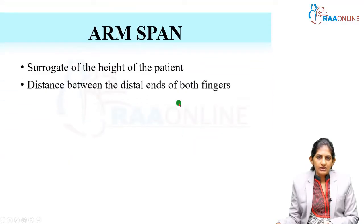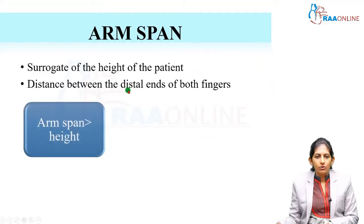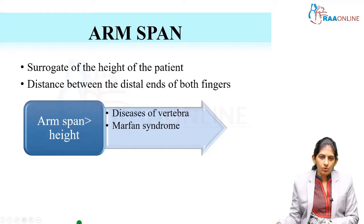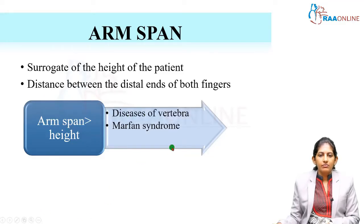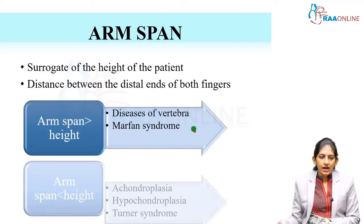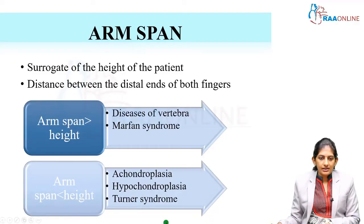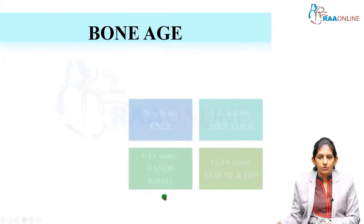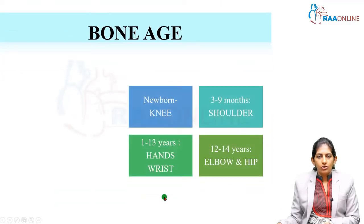Arm span is a surrogate marker of the height of the patient. If the arm span is more than the height, then Marfan syndrome is the differential diagnosis, as are diseases of the vertebra. If the arm span is less than the height, then achondroplasia or hypochondroplasia should be considered.